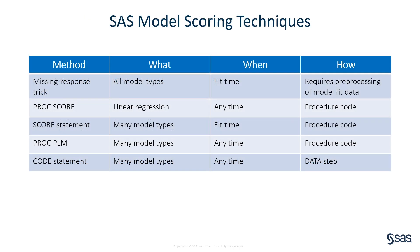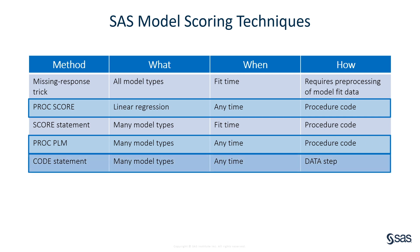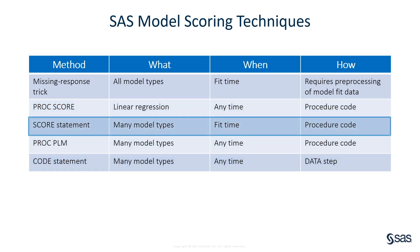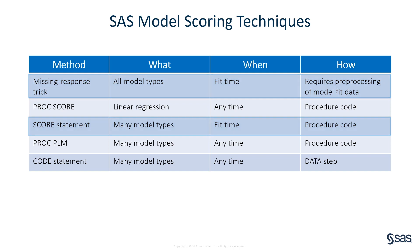This table shows the available techniques for scoring in SAS/STAT software. PROC SCORE, PROC PLM, and the CODE statement are techniques you can use to score new data at any time in the future without having to refit the model. The SCORE statement and the missing response trick can be used only when you fit the model. Also note that PROC SCORE can only be used with linear models.